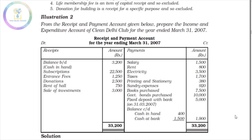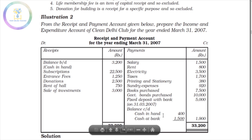Now, if you have a question, you will be able to click on the link in the description box. Now we are going to do the income and expenditure account. In the description box we have an opening balance and closing balance. We will prepare the income and expenditure account.